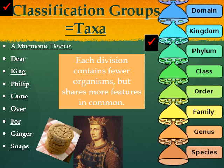Dear corresponds with Domain, King with Kingdom, Philip with Phylum, Came with Class, Over with Order, For with Family, Ginger with Genus, and Snaps with Species.